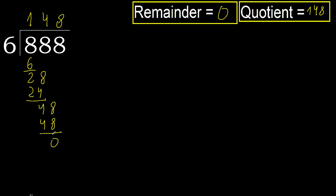Okay, remainder 0, therefore 888 divided by 6 is 148.